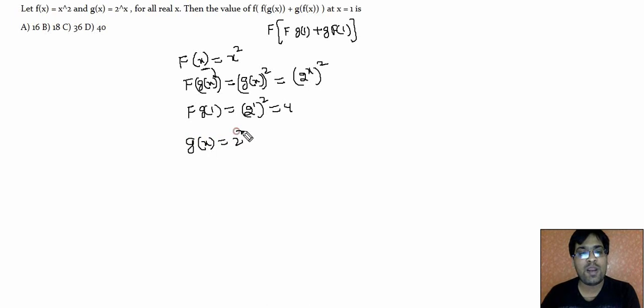Now what is g(x)? That is 2 to the power x. What will be g(f(x))? That will be 2 to the power f(x). What is the value of f(x)? That is x square. So it will be 2 to the power x square. We want to find value of g(f(1)), so that will be 2 to the power 1 whole square, which will be 2.